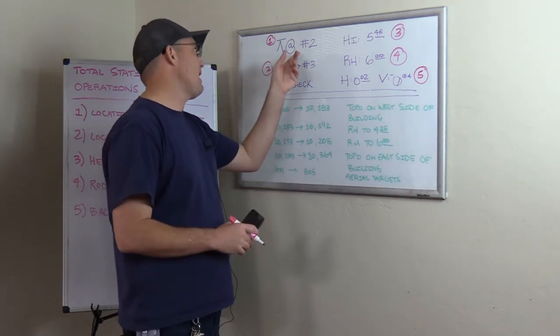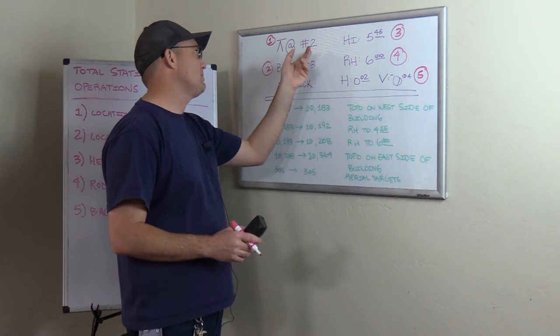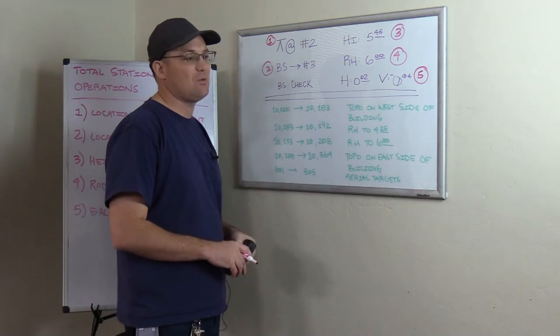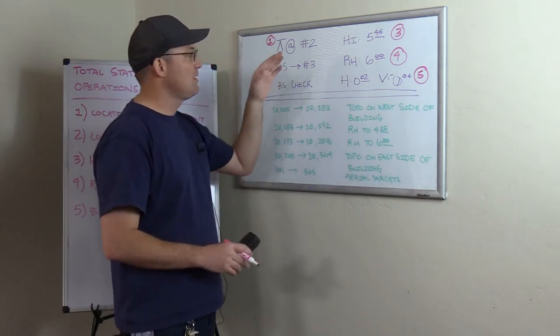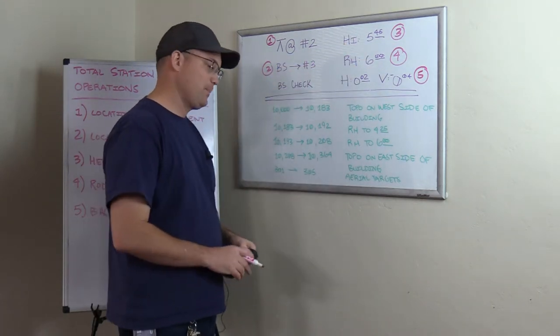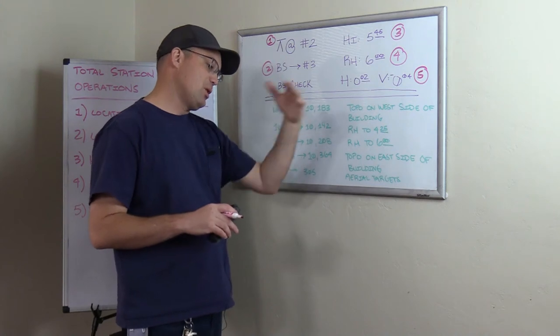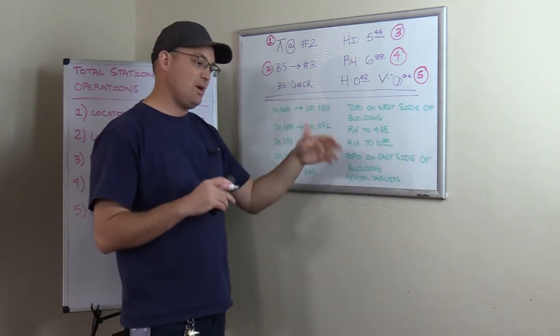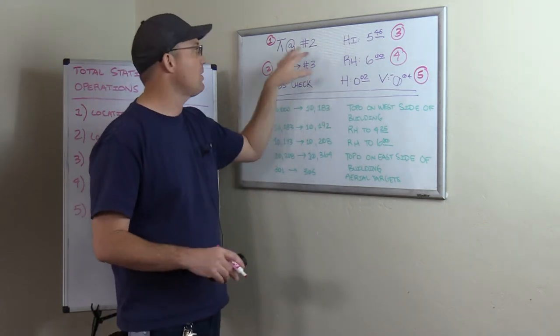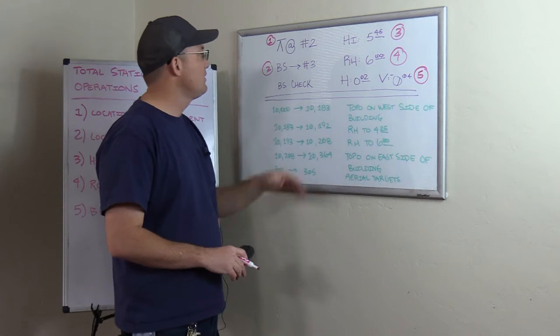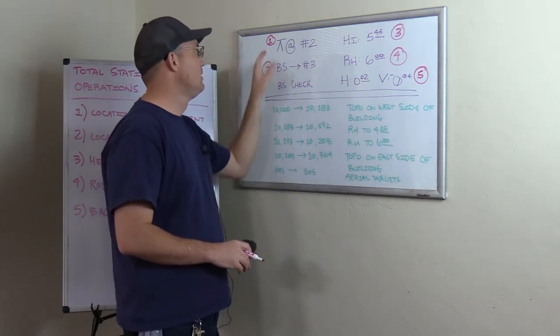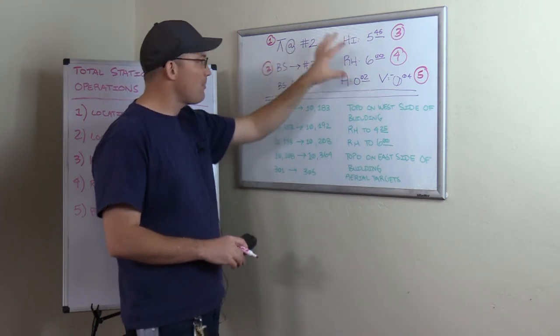Now somebody might say, well, yeah, that's true, but you also put in the setup number, point number and the backside point number and the HI and the RH. You put that in the data collector. Why do you make them write that down? So there's a very important difference. This data is input by the party chief into the instrument. The slope distance and the vertical angle and the horizontal angle are collected directly by the total station. And what you'll find if you do fieldwork long enough is, party chiefs will screw this up. So they'll enter a bad HI or rod height or they'll flop the backside and foresight point numbers. So that's why we make them write that down.